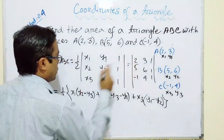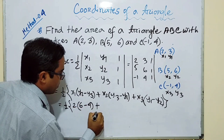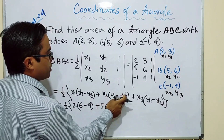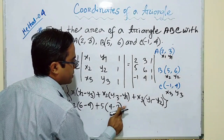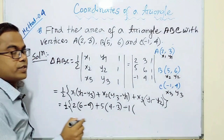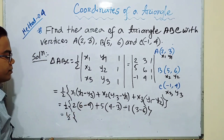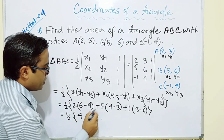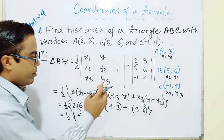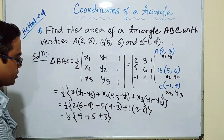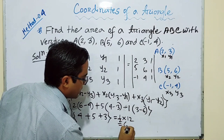Calculating: 2×(6-4) = 2×2 = 4. Then 5×(4-3) = 5×1 = 5. Then (-1)×(3-6) = (-1)×(-3) = +3. Adding: 4 + 5 + 3 = 12. Half of 12 = 6 square units. Same answer confirmed.